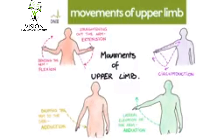Next is adduction of fingers: when the fingers are brought together, it is called adduction. The opposite is abduction of fingers: when the fingers are separated. Next is opposition of thumb: when the tip of the thumb touches the tips of any other finger, it is called opposition of the thumb. The last movement is circumduction of the thumb: movement of extension, abduction, flexion, and adduction in sequence is called circumduction of the thumb.